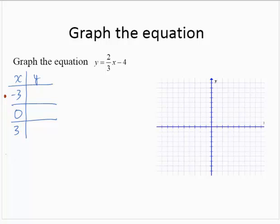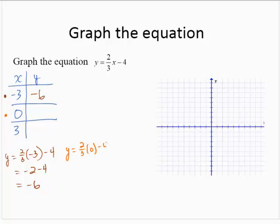If x is negative 3, y would equal 2/3 of negative 3 minus 4. 2/3 of negative 3 is negative 2, minus 4 is negative 6. Choosing 0, y would equal 2/3 of 0 minus 4. That's 0 minus 4, which is negative 4.